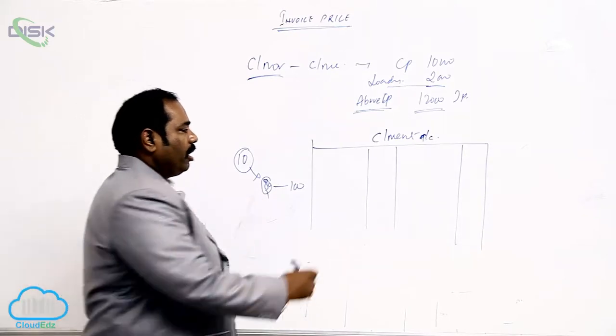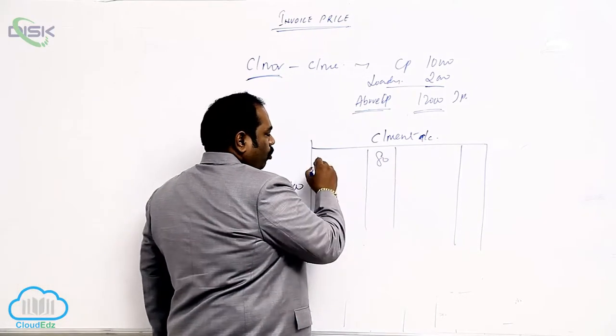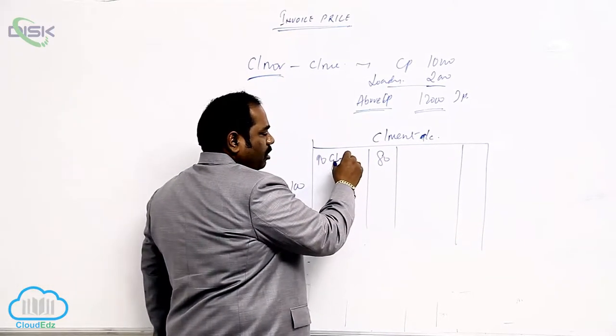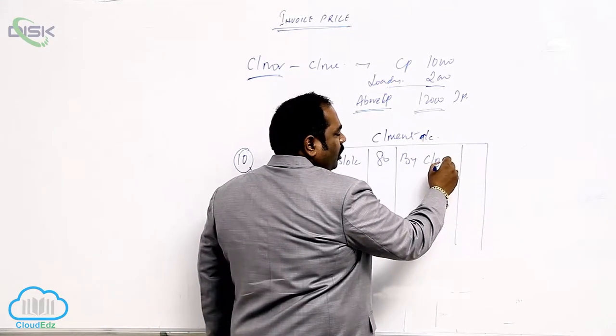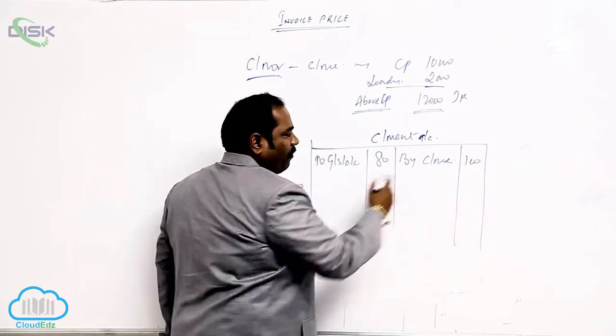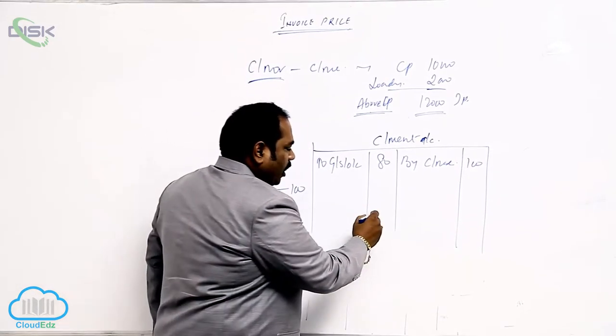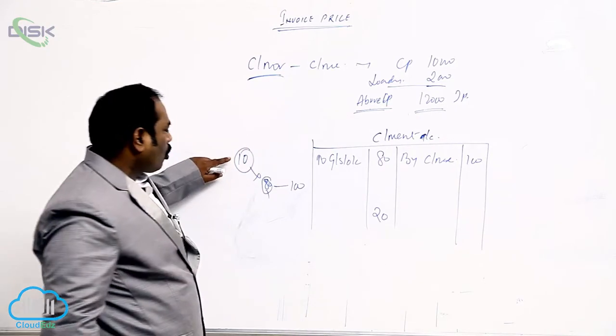For the agent, the cost price is 80 rupees for goods sent on consignment. He sold the goods by consignee at 100. What is the profit? As per the books we are getting 20, but actual cost price is...